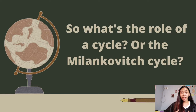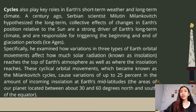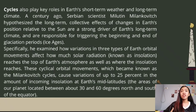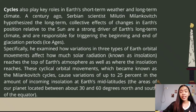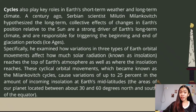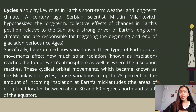Cycles play key roles in the Earth's short-term weather and long-term climate. A century ago, Serbian scientist Milutin Milankovitch hypothesized that the long-term collective effects of changes in Earth's position relative to the Sun are a strong driver of Earth's long-term climate and are responsible for triggering the beginning and end of glacial periods — the ice ages. He examined how variations in three types of Earth's orbital movements affect how much solar radiation, known as insolation, reaches the top of Earth's atmosphere. These cyclical orbital movements cause variations of up to 25 percent in incoming insolation at Earth's mid-latitudes — the areas between about 30 and 60 degrees north and south of the equator.